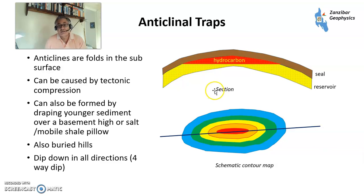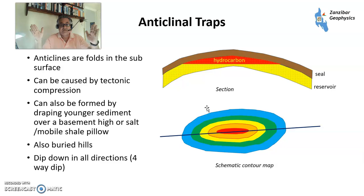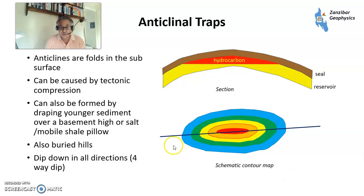The simplest trap is the anticline, which is effectively a fold. You have the crest at the top, going down-dip toward where the spill point potentially is. The yellow represents sand or limestone, red is hydrocarbon-bearing rock, and brown is the seal. Anticlines can be caused by tectonic compression, by younger sediment draping over a basement high, or by a salt or mobile shale pillow. The key thing is it dips in all four directions — known as four-way dip — which makes it simpler because fewer things can go wrong.